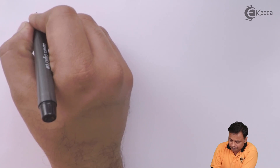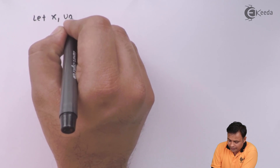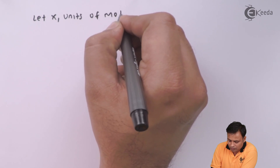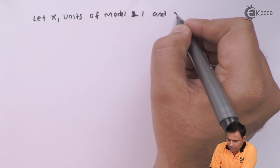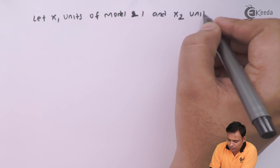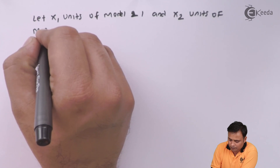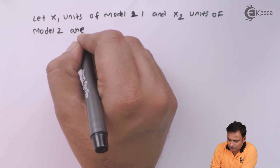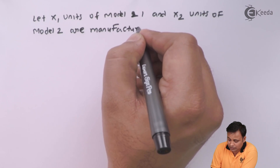First, we will work out the assumptions. Let x1 be the units of model 1 and x2 be the units of model 2 to be manufactured.